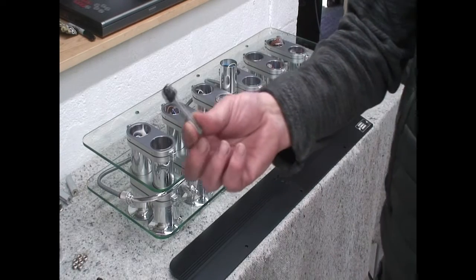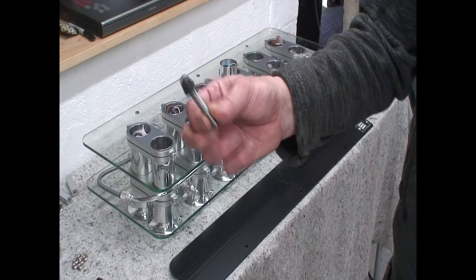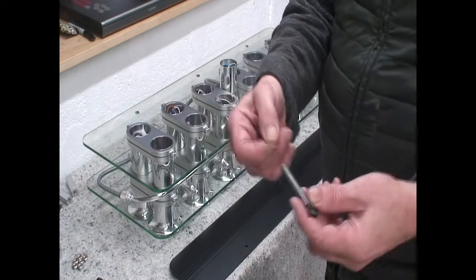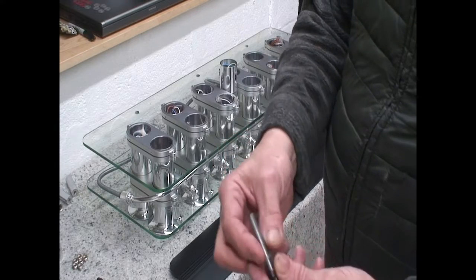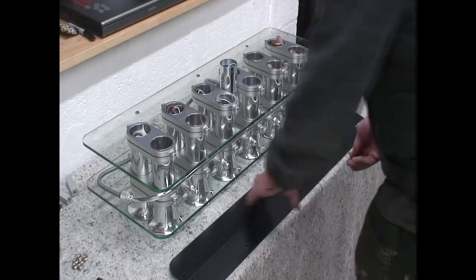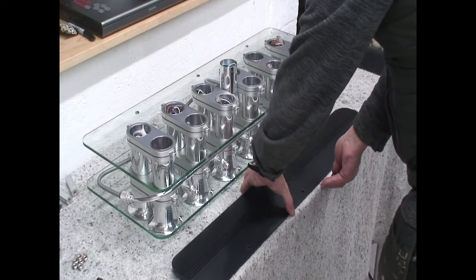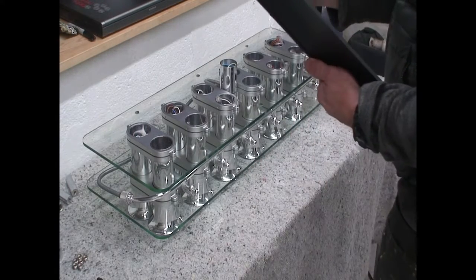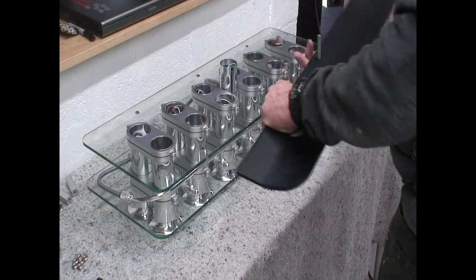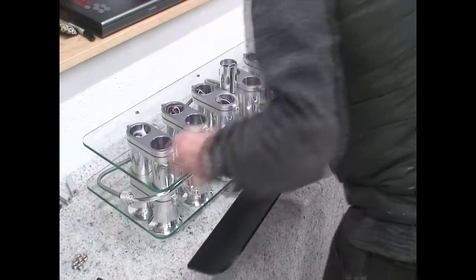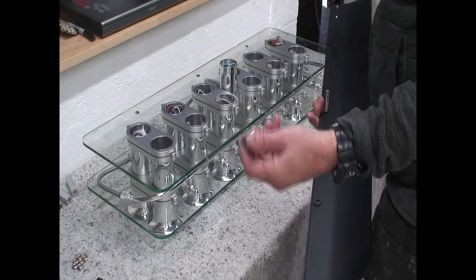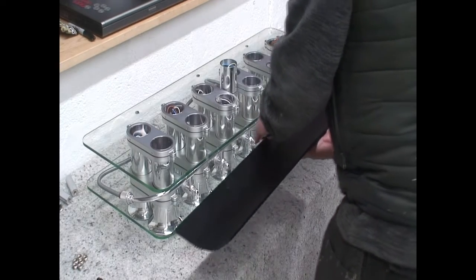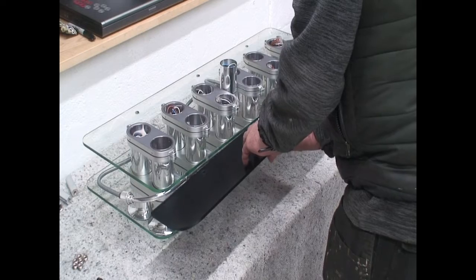You'll need six studs with a dome head and six clear washers to start. Pop the clear washer over the dome head, turn the wing upside down and pop it through the hole.